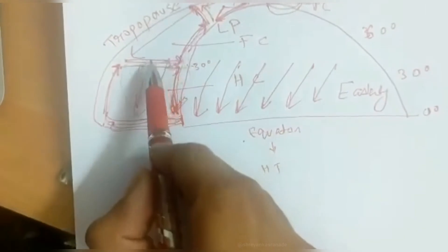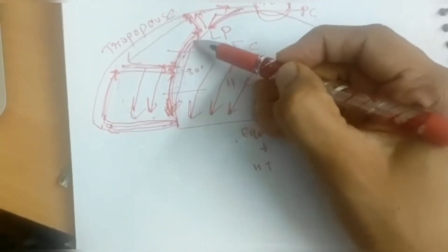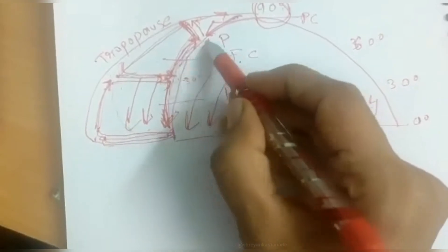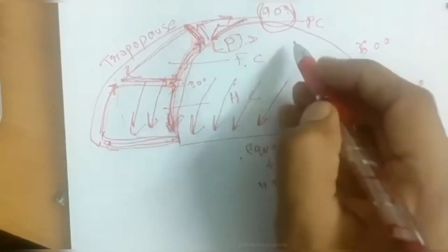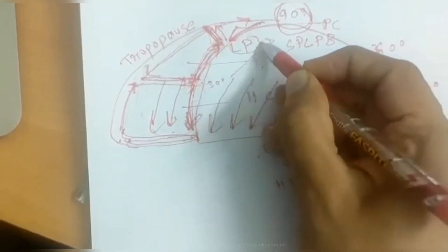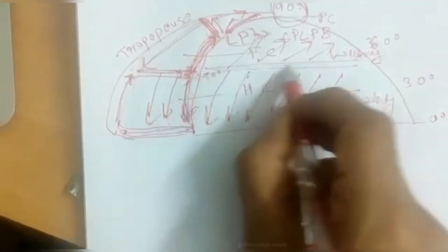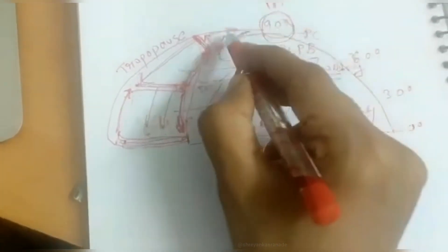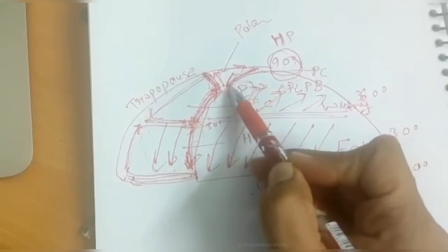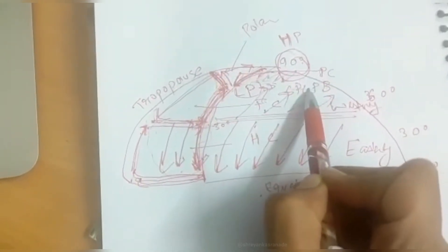Coming to the Ferrel cell, the air current sinks at around 30 degrees, moves towards the pole, and then rises up again — this is the Ferrel cell. Here there is a low pressure because the air was rising, forming the subpolar low pressure belt. The movement of air along the surface is westerly — from the tropical high pressure to the subpolar low pressure. In the polar cell, the movement of air from the polar high pressure to the subpolar low pressure is easterly in direction.